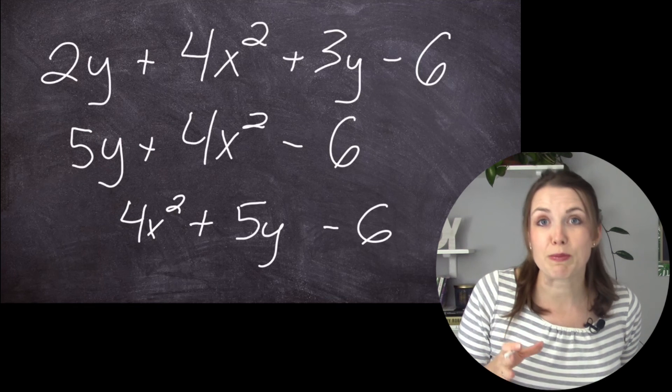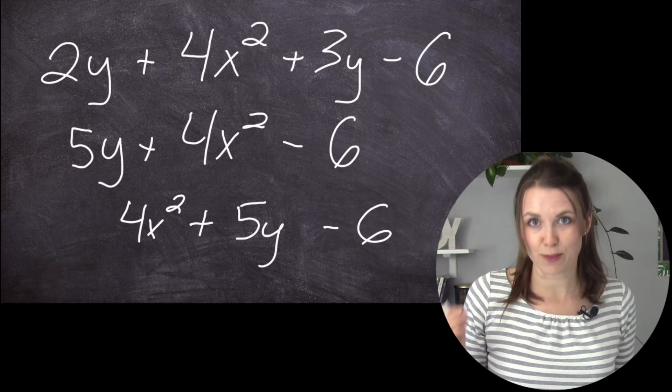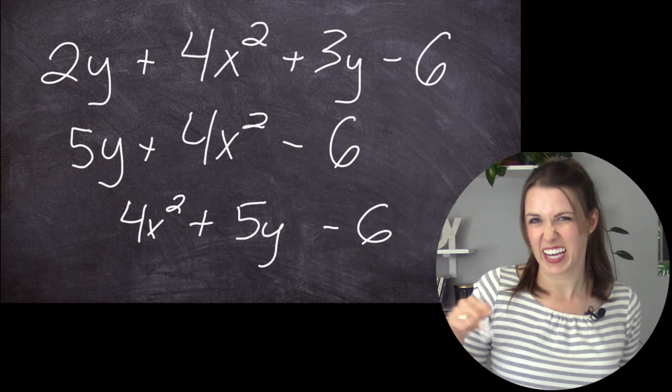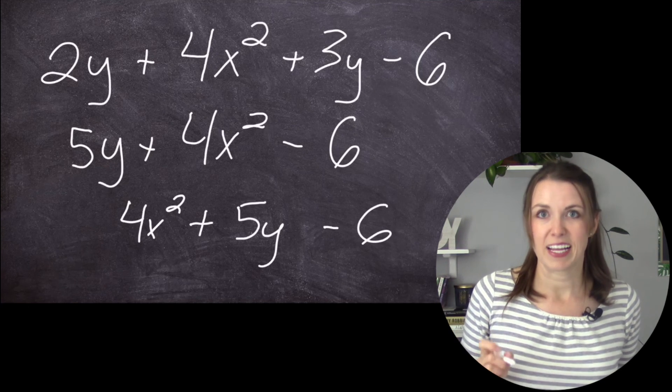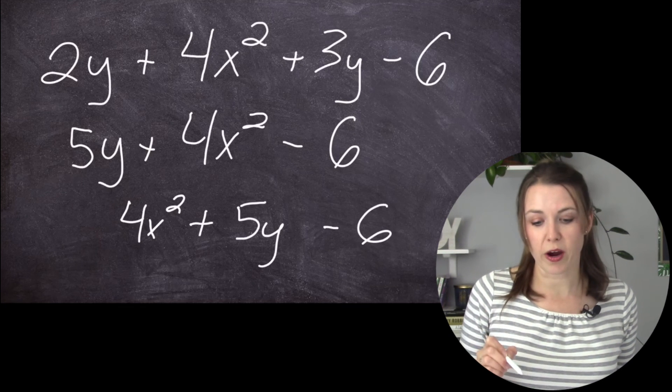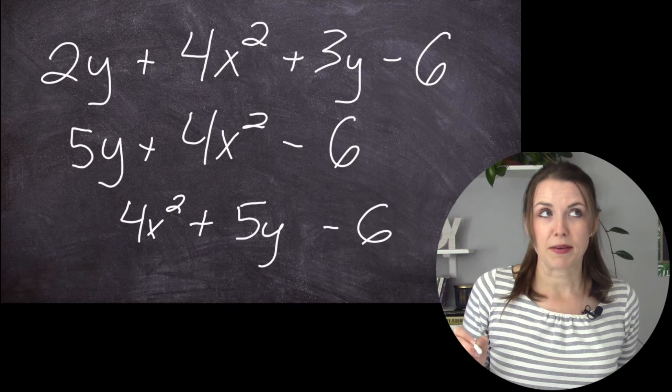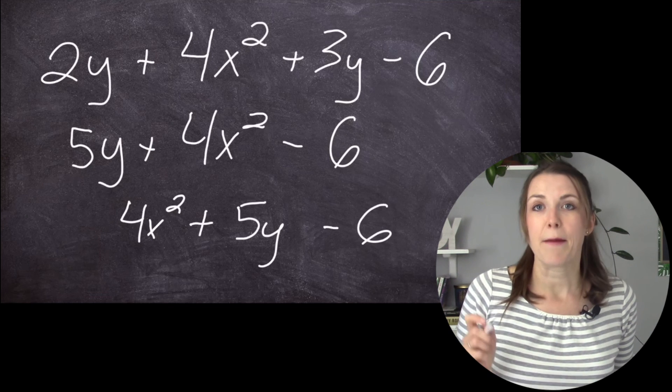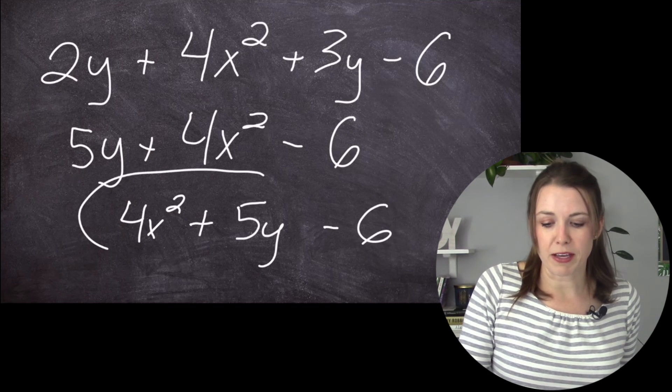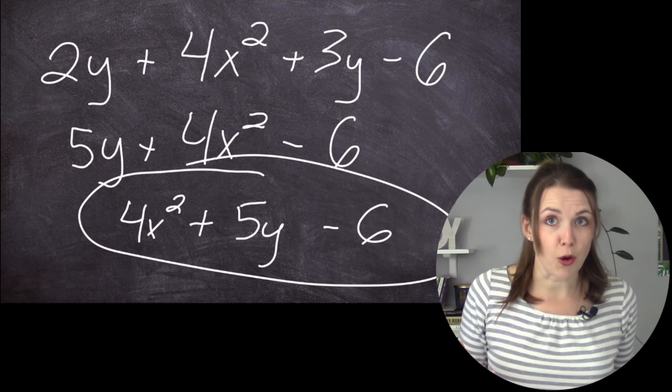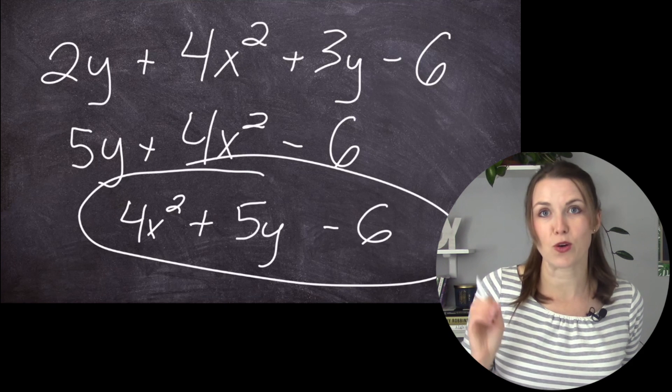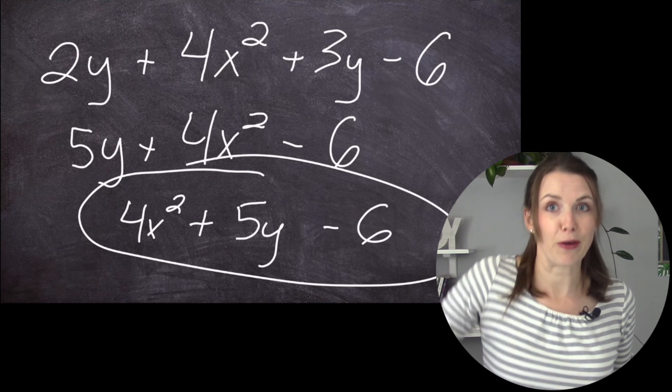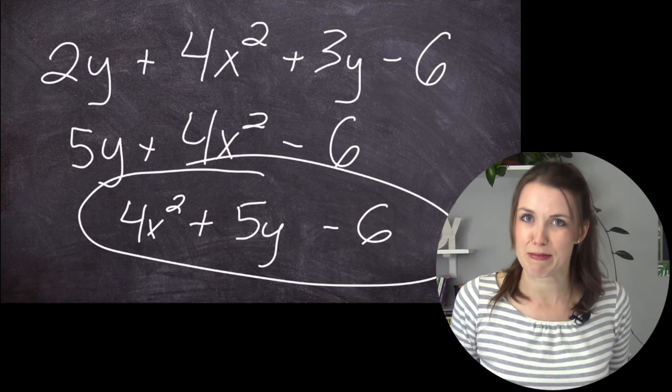And then we're going to put in our 4X squared. So you're always going to put the number with the highest exponent first. Again, exponent is just that squared up at the top. And so here we have 4X² plus 5Y, because Y doesn't have an exponent, minus 6. So make sure that you're putting your polynomials in the correct order to prep you for when it becomes a little more complicated.